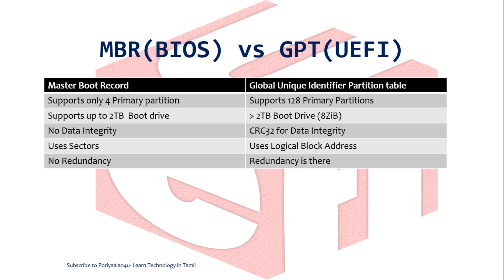GPT also adds data integrity through CRC32 (Cyclic Redundancy Check) checksums, which detect data loss during transfer. GPT uses logical block addressing (LBA) for partition addressing, unlike MBR's fixed sector size. And crucially, GPT provides redundancy — if the primary partition is corrupted, the backup GPT information records the data, unlike MBR which has no such backup.